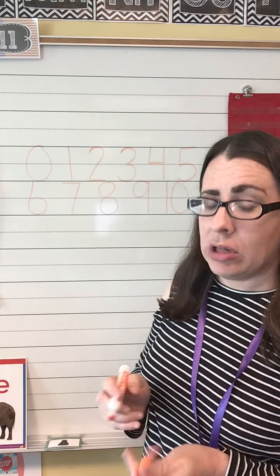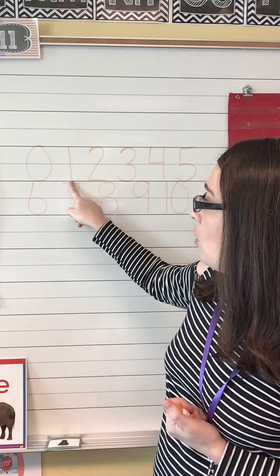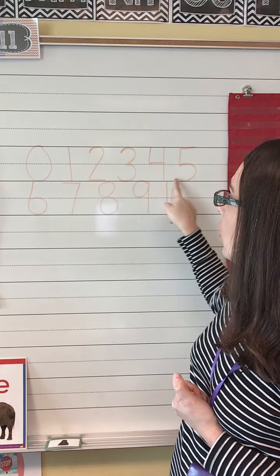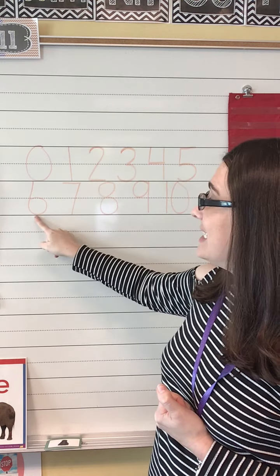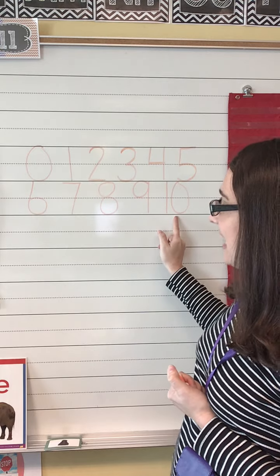All right. Let's reread all of our numbers to make sure we got them. Zero. One. Two. Three. Four. Five. Six. Seven. Eight. Nine. Ten.